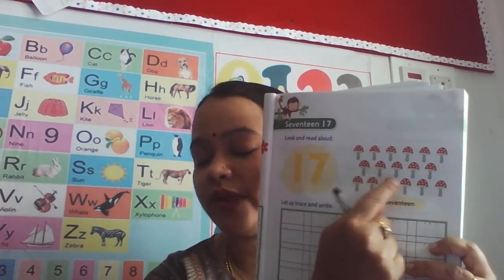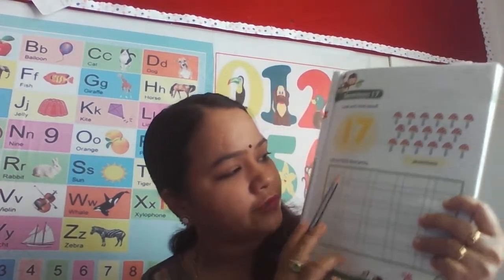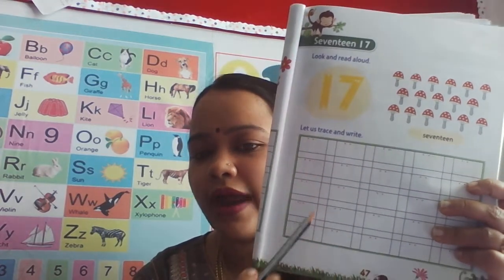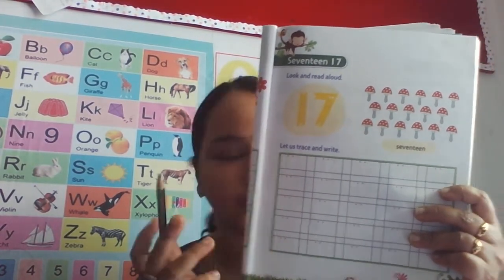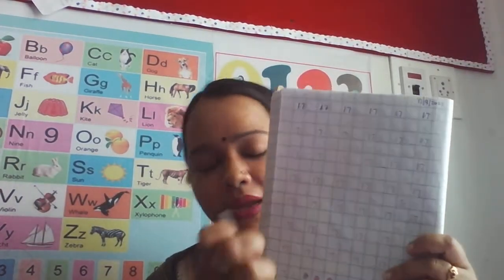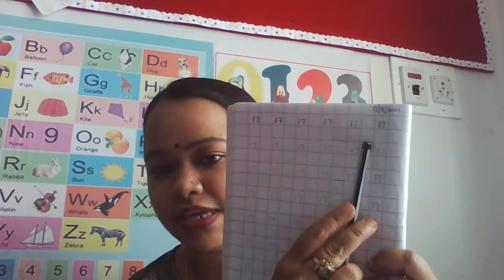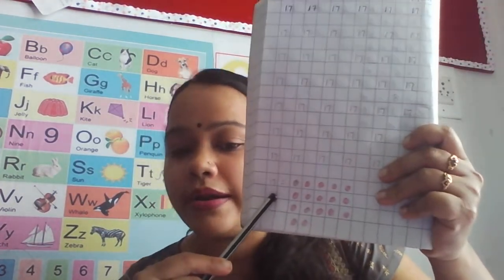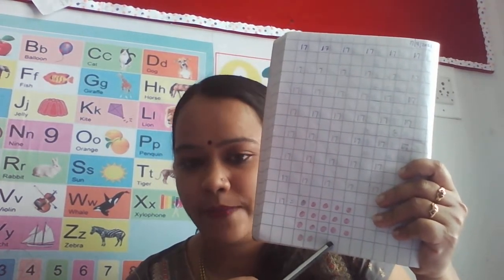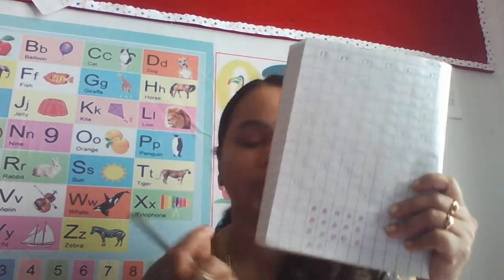You should point your fingers and count all the mushrooms. After counting, you have to trace number seventeen and write number seventeen for the full page. After writing in this book, take out your box book and tell your mummy to write the first number seventeen, then you write the remaining. At the end, draw seventeen circles in a five-five pattern and color all the circles.